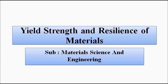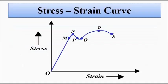Hello friends, welcome to Engineering Tutorial. We will continue our discussion related to the various properties of materials. So far we have discussed about tensile strength, ductility, toughness, and the ductile and brittle nature of materials. In this video we are going to discuss about two other properties associated with materials: yield strength and resilience. All these properties are associated with the stress-strain curve of materials.